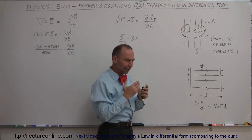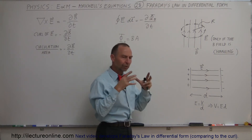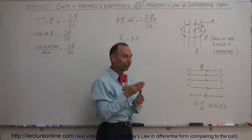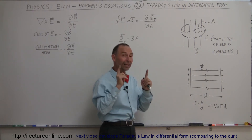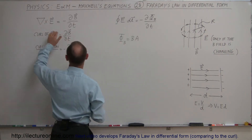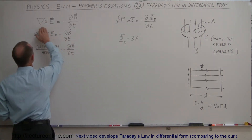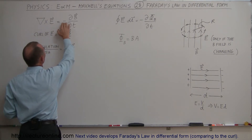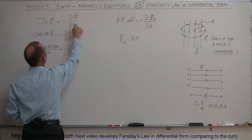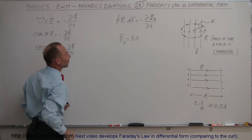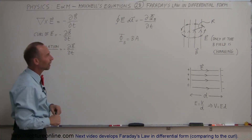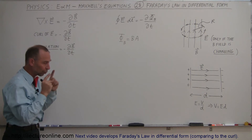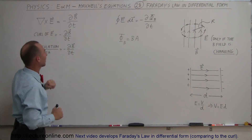Whenever we think of an electric field or a magnetic field which is circular, electric and magnetic fields are vectors. Circular means we can think about the curl, and that's why this form is so interesting. We can say that the curl of the electric field is equal to the negative of the partial derivative with respect to time of the B field.